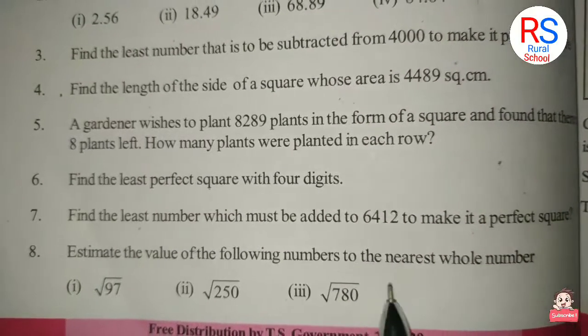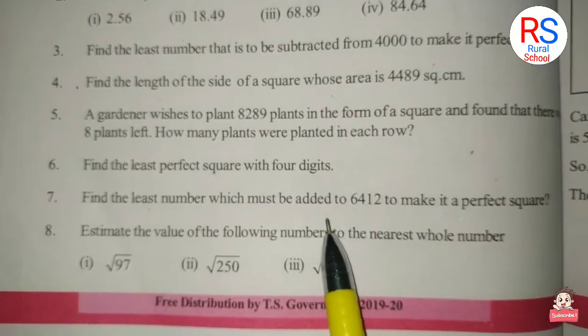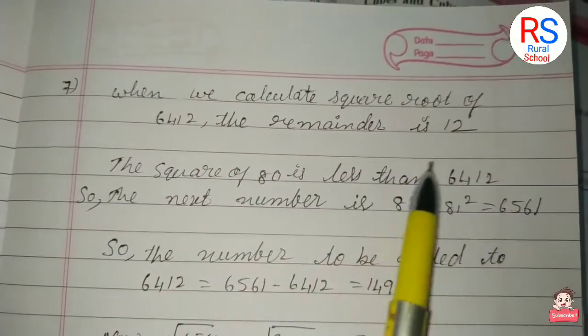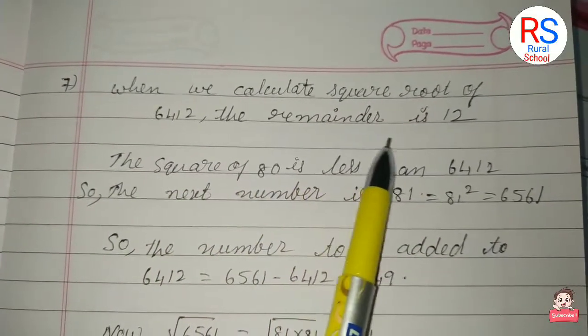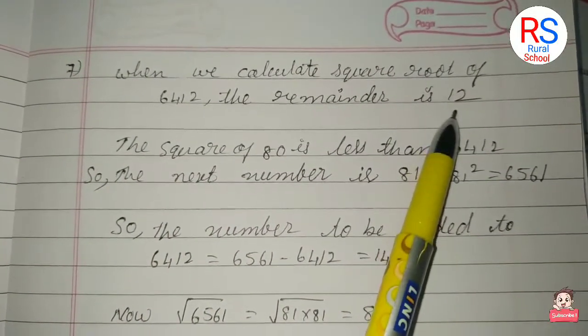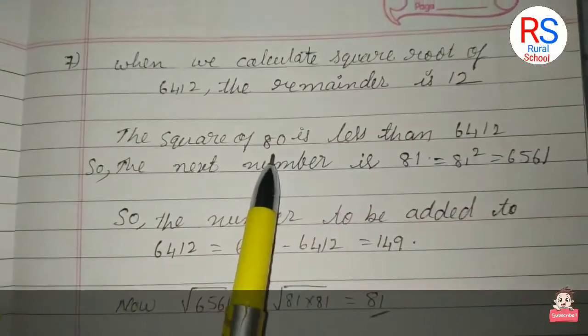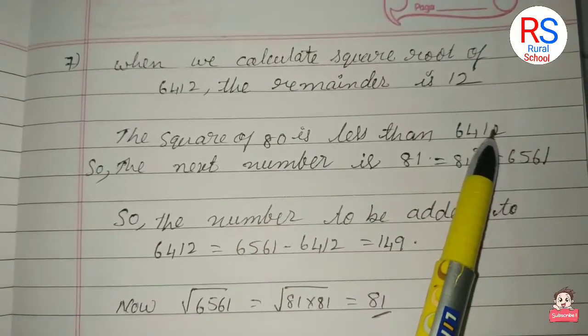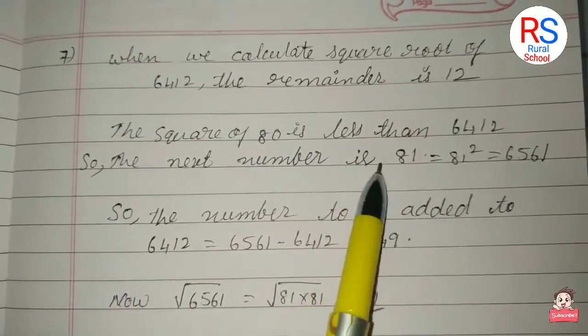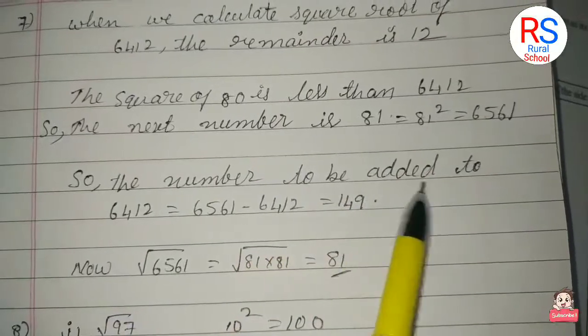be added to 6412 to make it a perfect square. When we calculate the square root of 6412, the remainder is 12. The square of 80 is less than 6412.